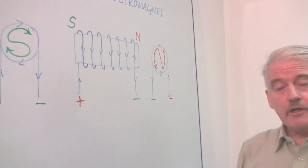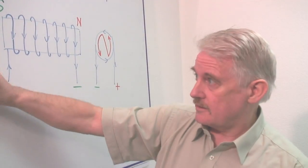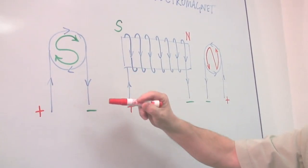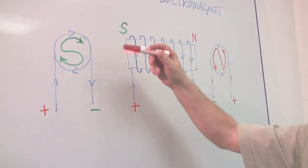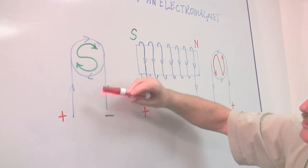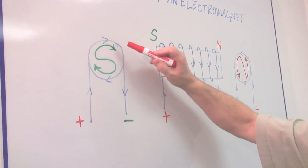Now, if the current goes from plus to minus as it does, although really it doesn't but we say it does, the electrons go from minus to plus. But here we have, as you can see, the current going round clockwise.